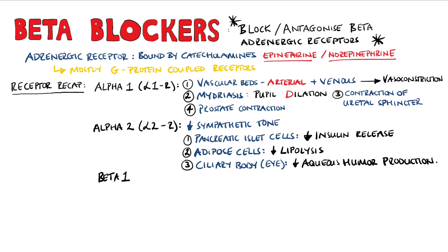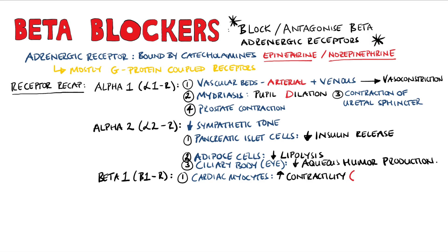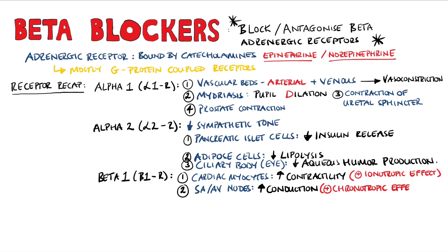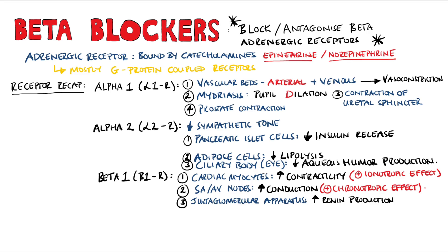Beta-1 receptors are found on the cardiac myocytes, as well as on the sinoatrial and atrioventricular nodes. Their activation leads to an increase in contractility, termed a positive inotropic effect, and also an increase in conduction through the SA and AV nodes, termed a positive chronotropic effect. These receptors are also present in the juxtaglomerular apparatus, which when activated leads to an increase in the production of renin.